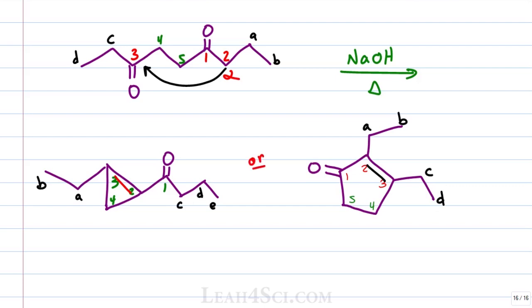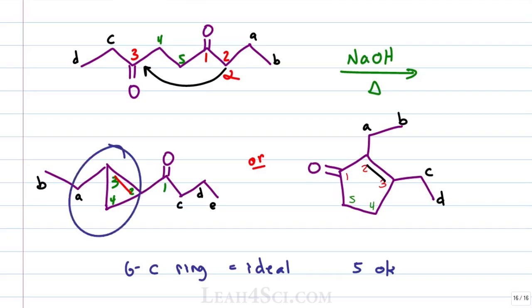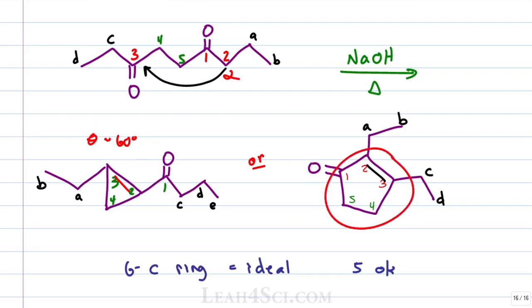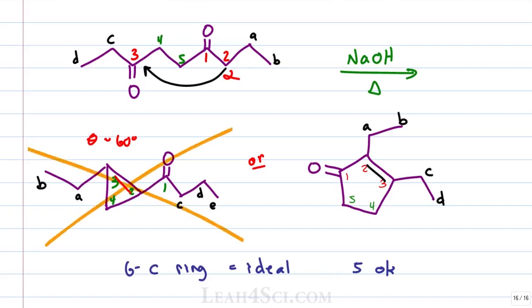The question is which product do we prefer? This is where you take ring strain into account. The ideal ring has six carbons. A five-carbon ring is acceptable, but anything smaller is very unstable. In this case, the green alpha gives us cyclopropene — a triangle with bond angles of about 60 degrees, while the sp2 carbons want 120 degrees and the sp3 carbon wants 109.5 degrees. This is way too strained and unstable. The five-membered ring on the other hand gives larger angles and is much more stable. In organic chemistry, the more stable the product the more likely it is to form — so we won't form the three-membered ring. The five-membered ring is the major product.